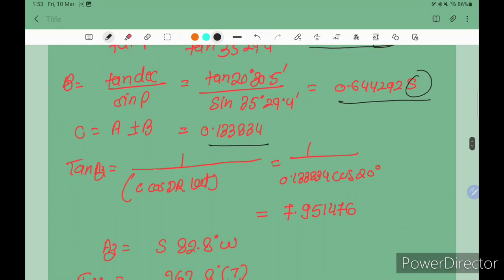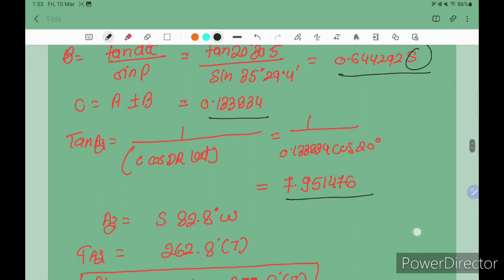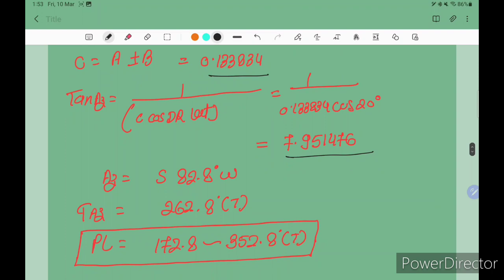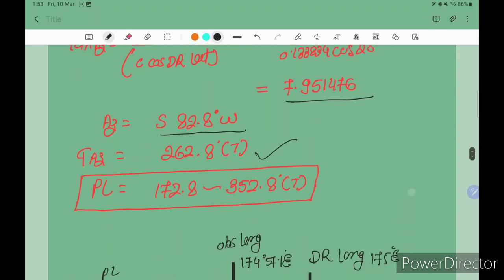Then we get the value of C. Now put the value in tan azimuth equals 1 divided by C times cos DR latitude. You get tan azimuth value 7.951476, so azimuth is 82.8 degrees. Southwest true azimuth is 180 plus 82.8 equals 262.8 degrees. Position line is plus or minus 90 degrees to azimuth.